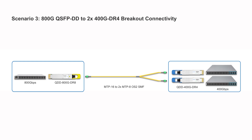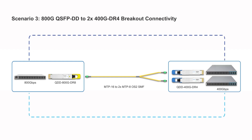For establishing an 800G high-speed connection, you can use an MTP16 to 2x MTP8 OS2 patch cable to connect two QDD 400G DR4 modules to one QDD 800G DR8 module, enabling communication between 400G and 800G switches.